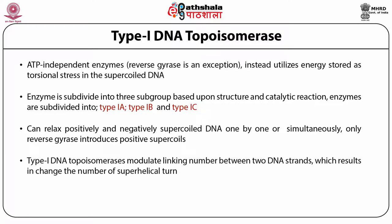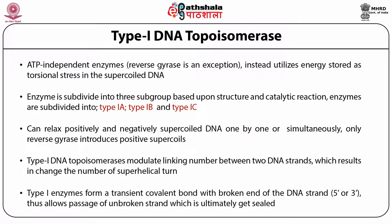Type 1A DNA topoisomerase modulates the linking number between two DNA strands, changing the superhelical turn. Type 1 topoisomerase involves a transient covalent bond between the broken end of DNA with either the 5' end or 3' end, which is re-annealed after the activity is over, allowing the passage of the unbroken strand and thereby relieving torsional stress.